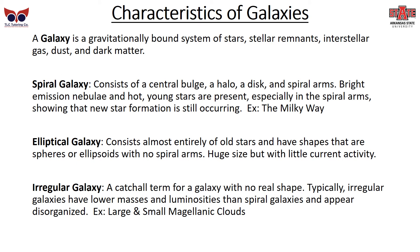A galaxy is a bound system of stars, stellar remnants, interstellar gas, dust, and dark matter that is all gravitationally connected together. So galaxies are made up of stars. There are three major types of galaxies in our observable universe.